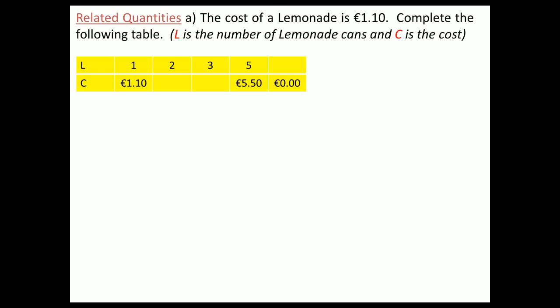Before I do this I'll do a quick recap of what direct and indirect proportion are. I'll start with a little example about the cost of lemonade — one euro ten. I have to complete the following table where L is the number of lemonade cans and C is the cost. The cost of one lemonade can is one euro ten. To get the cost of two cans, it'll be twice one ten, which is two twenty. Similarly, three will be three thirty.